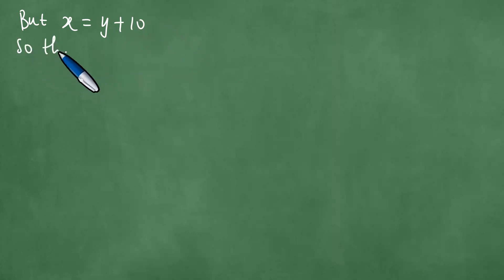So that y equals minus 5 yields x equals minus 5 plus 10, which is 5.